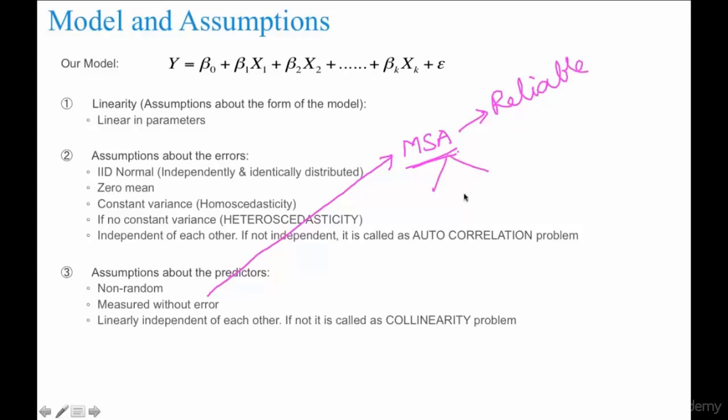For this, you have two techniques. If you're dealing with attribute data, then there is a concept called as attribute agreement analysis. And if you're dealing with continuous data, you go with a technique called as gauge R and R, repeatability and reproducibility.